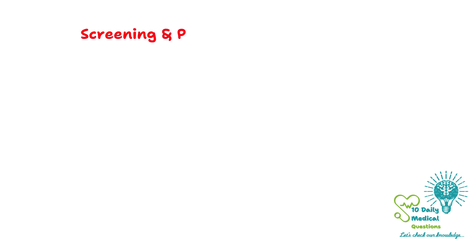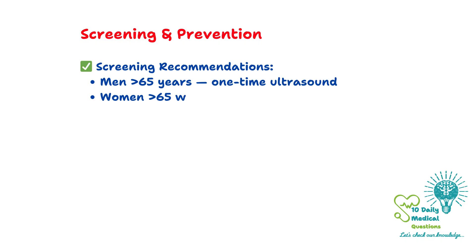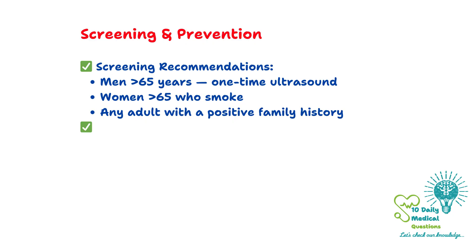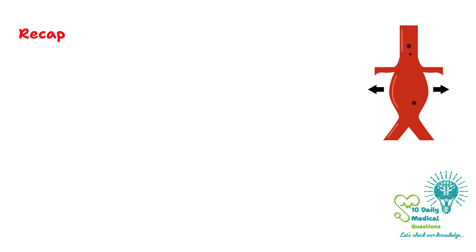Screening is a key element of prevention. One-time screening with abdominal ultrasound is recommended for men over 65 years of age, for women over 65 who have smoked, and for any adults with a family history of abdominal aortic aneurysm. Early detection allows for monitoring and timely intervention before rupture occurs.